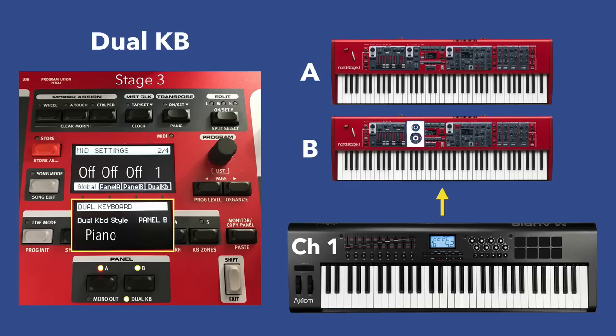Setting the Dual Keyboard to Piano gives the same scenario except the Piano is controlled by the external keyboard; the Synth option makes only the synth controlled externally. If I play the Nord Stage 3 directly in synth mode, I could hear everything on Panel B except the synth, which has no MIDI signal sent to it locally. An important note: when running in organ, piano, or synth-only mode, if a split is set up on the Nord Stage 3, it will not be reflected on the external keyboard — whatever engine is selected plays across the entire external keyboard range.